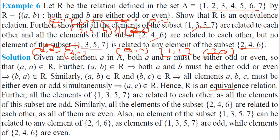For the second part: all elements of {1, 3, 5, 7} are related to each other because any two of them are both odd. All elements of {2, 4, 6} are related to each other because any two are both even. No element of the odd subset can be related to any element of the even subset — you cannot relate 3 with 4 since one is even and one is odd.